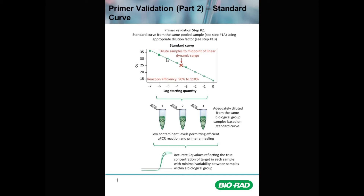All unknown samples for a given experiment should fall within the valid range of the primer validation standard curve to confidently assure that the CQ values generated in each individual sample are consequent to the concentration of the target molecules — not to potential contaminants. The purpose of the standard curve is to determine how to dilute the individual samples so that contaminants are at a low enough level that they don't impede the reaction and alter CQ values.